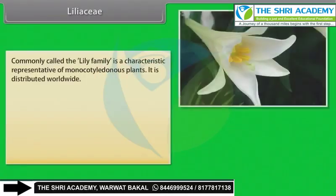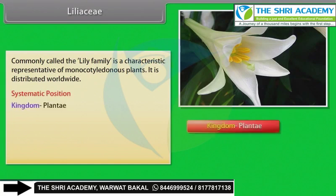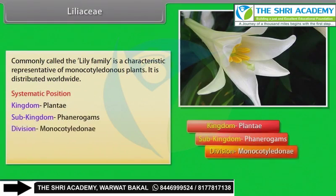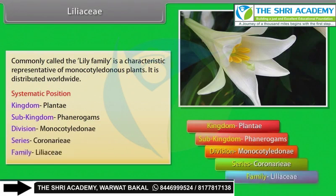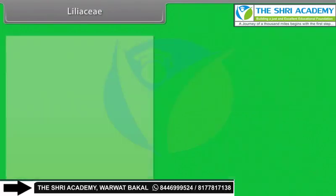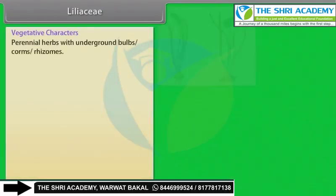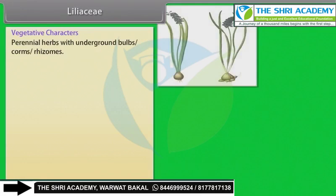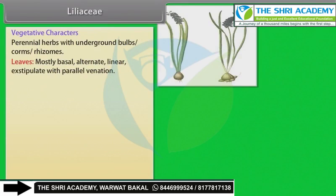Liliaceae: commonly called the lily family, is a characteristic representative of monocotyledonous plants. It is distributed worldwide. Systematic position: Kingdom Plantae, Sub-kingdom Phanerogams, Division Monocotyledonis, Series Coronariae, Family Liliaceae. Vegetative characters: perennial herbs with underground bulbs, corms, rhizomes; leaves mostly basal, alternate, linear, exstipulate, with parallel venation.